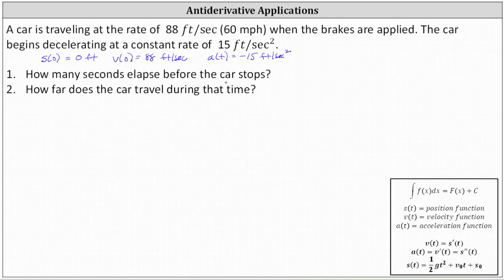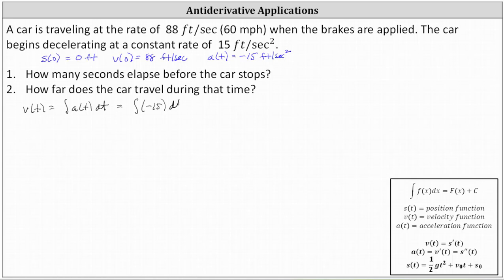Number one: how many seconds elapsed before the car stops? To answer this question, we need to determine when the velocity function is equal to zero. Before we do this, we need to recover the velocity function using the acceleration function. Recall the acceleration function equals the derivative of the velocity function, which indicates we can recover the velocity function by integrating the acceleration function. V of t equals the integral of a of t dt, which gives us the integral of negative 15 dt, which equals negative 15t plus c. We can determine the constant because we know the initial velocity v of zero equals 88, so the constant c is equal to 88.